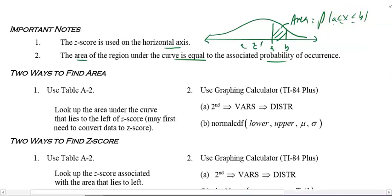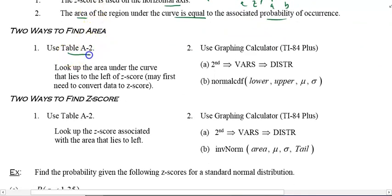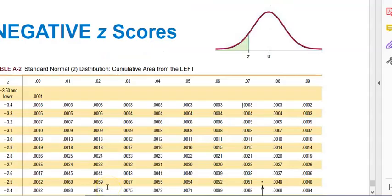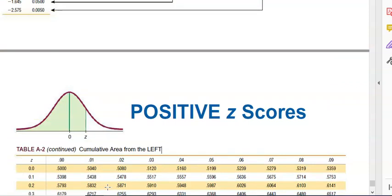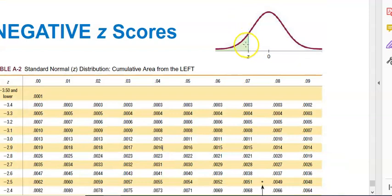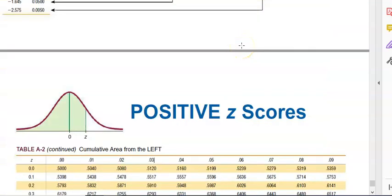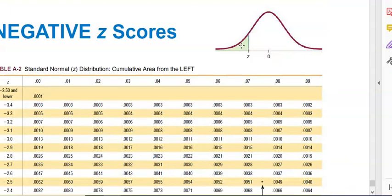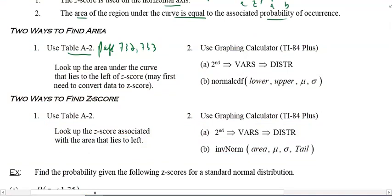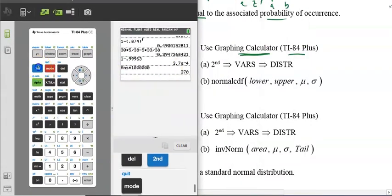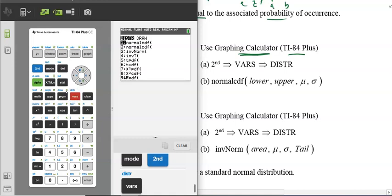Two ways to find the area: there's table A-2 on pages 732–733 in your book. The table only gives area to the left. But we're mainly going to use the calculator. On the TI-84, go to 2nd → Distribution and select normalcdf — it's the second option down.